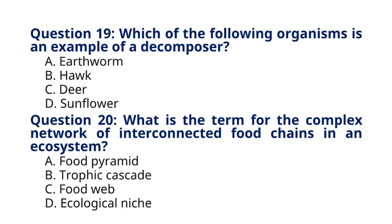Earthworms are decomposers that break down dead organic matter into simpler substances, aiding in nutrient recycling in ecosystems. Question 20: What is the term for the complex network of interconnected food chains in an ecosystem? A. Food pyramid. B. Trophic cascade. C. Food web. D. Ecological niche. The correct answer to question 20 is option C, Food web. Explanation: A food web illustrates the various feeding relationships among organisms in an ecosystem, showing how energy and nutrients flow through the community.